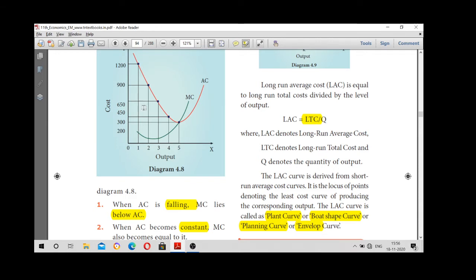Okay, when average cost is decreasing, marginal cost curve lies below AC. See, this is the lowest point. When AC is falling, MC curve lies below AC.